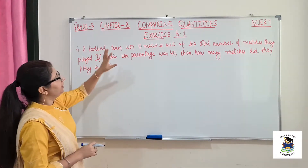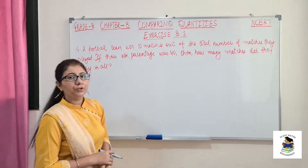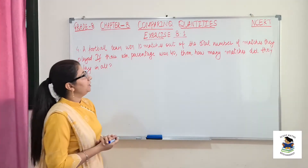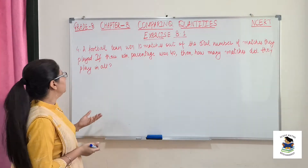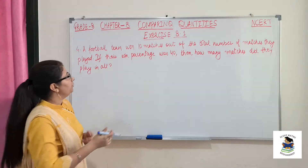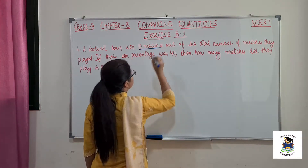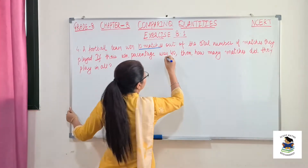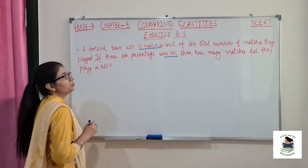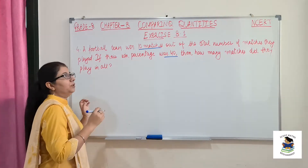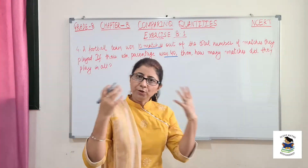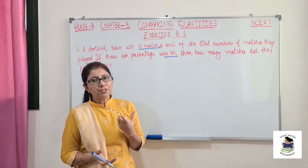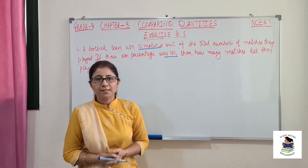The fourth question is: a football team won 10 matches out of the total number of matches they have played. If their win percentage was 40, then how many matches did they play in all? So we are given 10 matches won and their win percentage is 40. We need to find how many total matches they played.